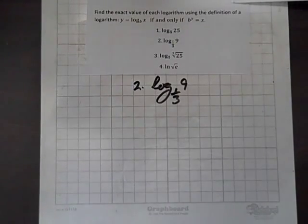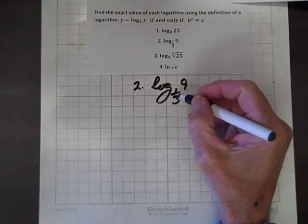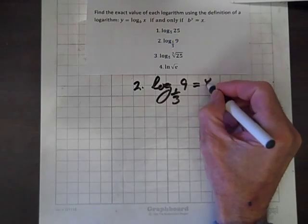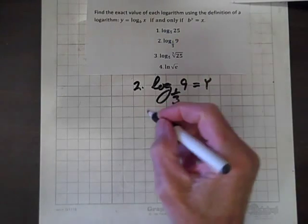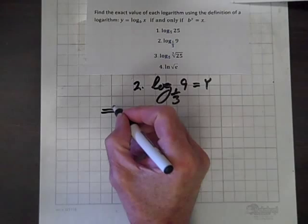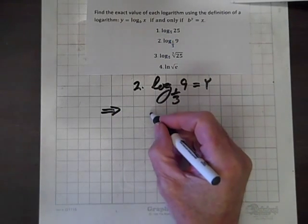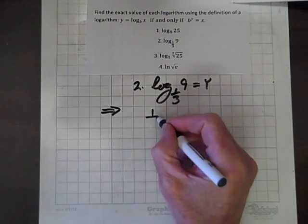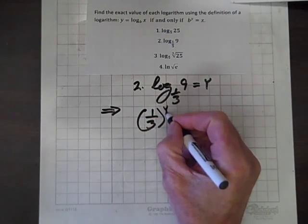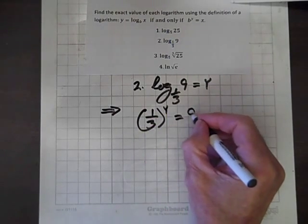For number 2, we have log to the base 1/3 of 9, and we'll set that equal to y. Rewriting this in exponential form, we have the base of 1/3 raised to the y power equals 9.